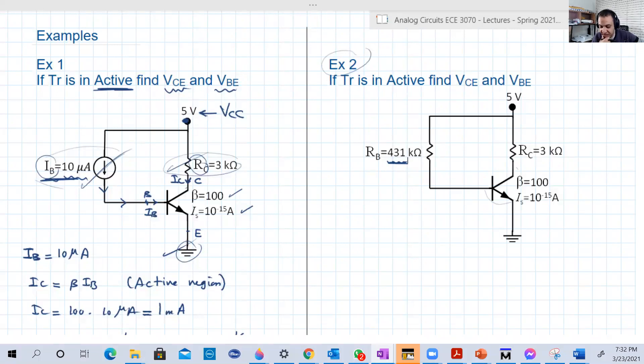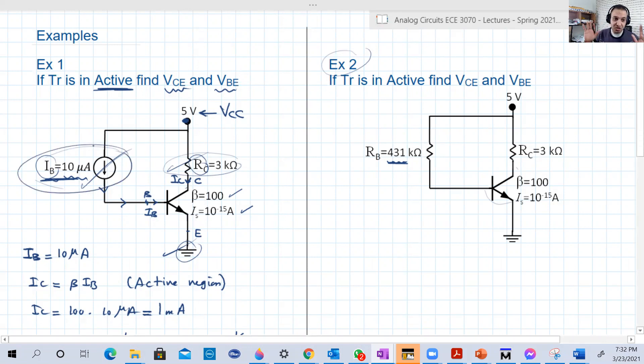Hello guys, welcome back to our lecture 17. We're going to now solve another example. So in the first example, we have here a current source. This current source is in the same branch as IB, so basically IB is known.